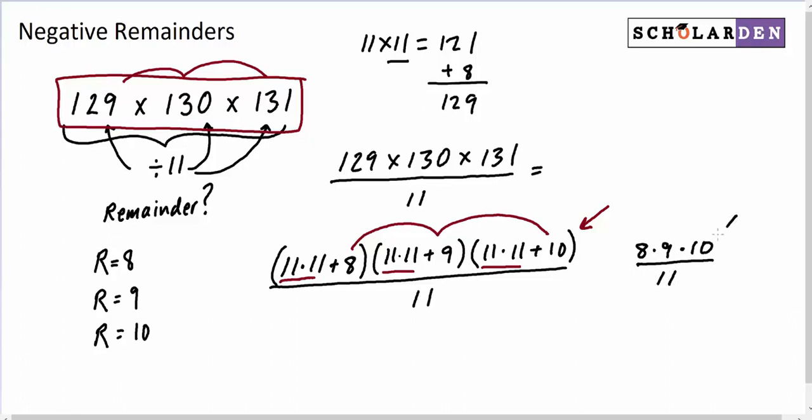Now, this is not the remainder because that's a big number that 11 does go into more. And 8 times 9 times 10 is 720, so now we have 720 over 11. 11 is going to go into that more times. More specifically, if you divide 11 into 720, you're going to get 65. So 720 is 11 times 65, and there is a remainder of 5. So that tells us the remainder is 5.